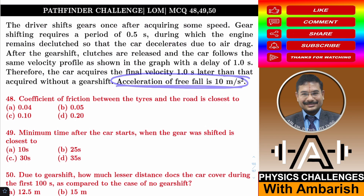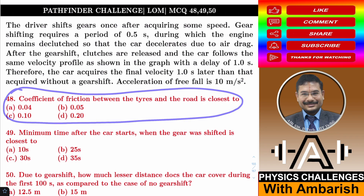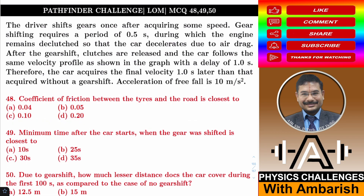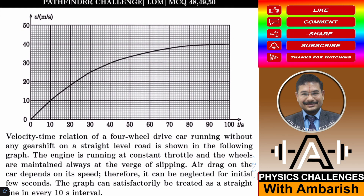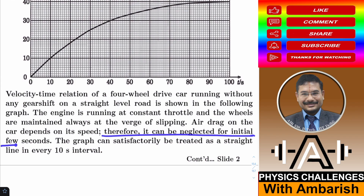Based on this passage we have to answer some questions. The first question asks: what is the coefficient of friction between the tires and the road? For initial time, air drag can be ignored since initial speed is small. That means the acceleration is only due to frictional force. So acceleration A equals F/M where F is the frictional force, giving A = μg.